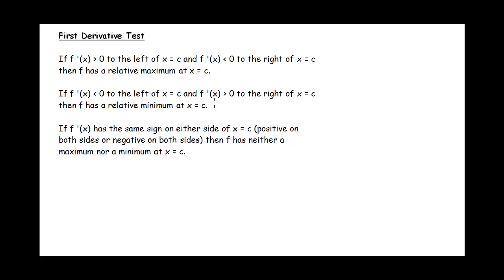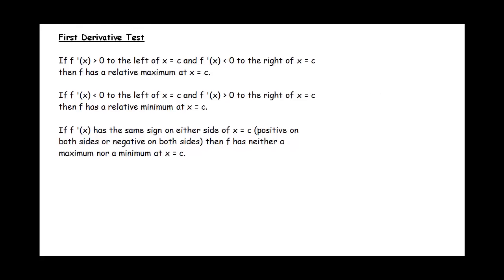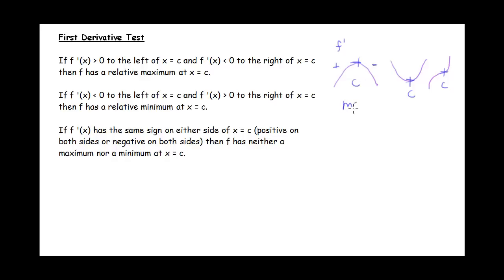Let's remind ourselves how the first derivative test works. If we have a function that has a stationary point at C, the slope is zero at x equals C. The first derivative test tells us: if the sign of our derivative is positive on the left and negative on the right, then we have a maximum. If it's negative on the left and positive on the right, then we have a minimum. And if the sign doesn't change — negative and negative, or positive and positive — then it's neither a max nor a min.